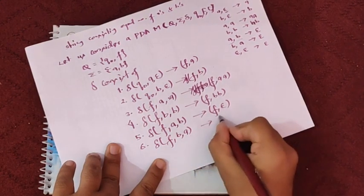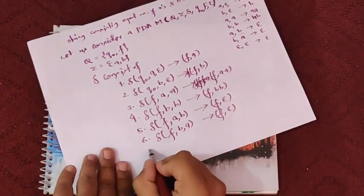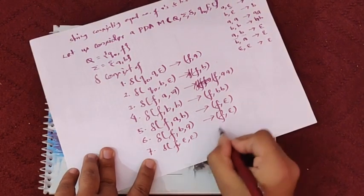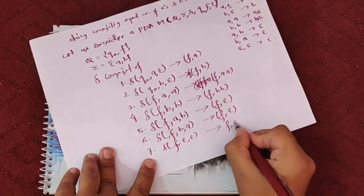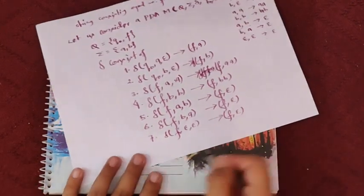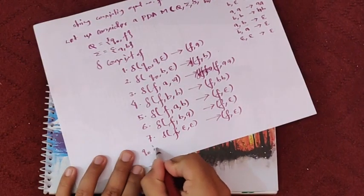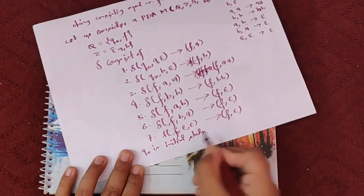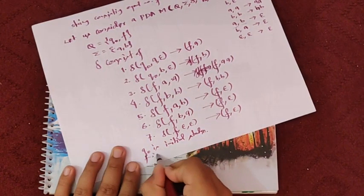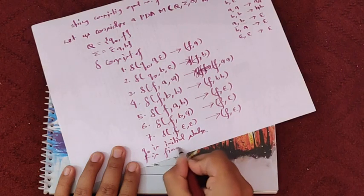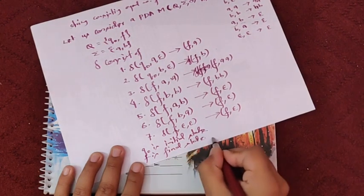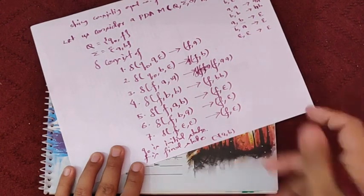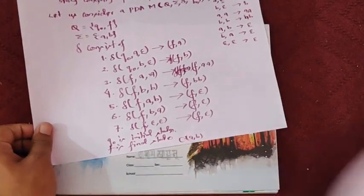Sixth rule: when all are empty — empty on the input tape and empty on the stack — we move to the final state. Q0 is our initial state, F is our final state, and tau is A.